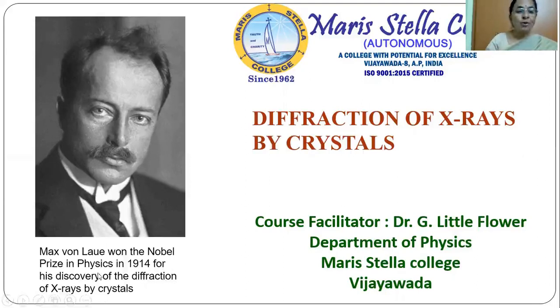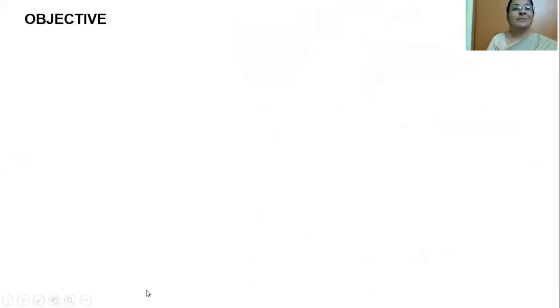Max von Laue received the Nobel Prize in physics in the year 1914 for his discovery of the diffraction of X-rays by crystals. Discovering X-rays received a Nobel Prize and diffracting these X-rays by crystals received Nobel Prize by Max von Laue. I hope you are all thrilled to learn about many Nobel Prize won experiments in this course on modern physics. The objective of today's sharing is to discuss the diffraction of X-rays by crystals.